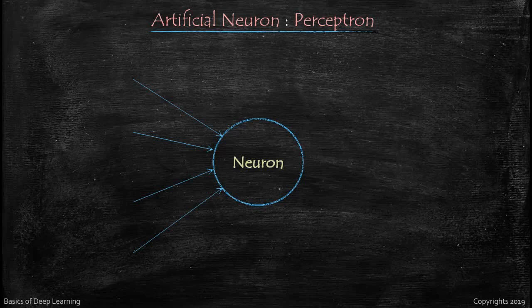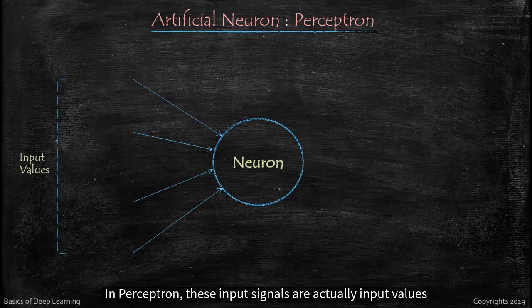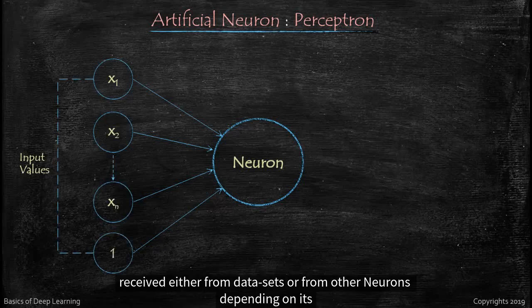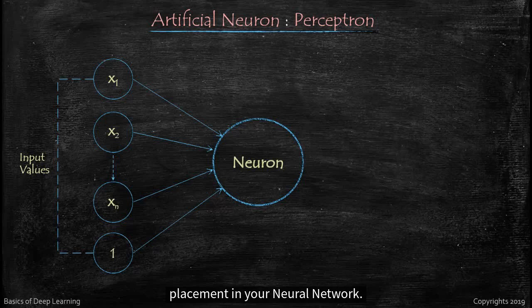This neuron receives a signal from other neurons. In perceptron, these input signals are actually input values received either from datasets or from other neurons, depending on its placement in neural network, that is whether it is a hidden layer or in an output layer. We will talk about it in future.